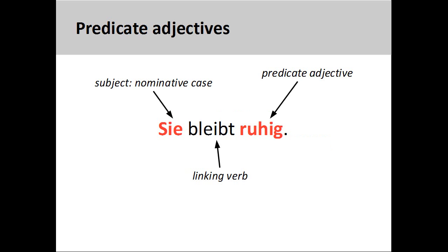In the sentence you see here, 'sie bleibt ruhig' — she remains calm — the verb 'bleibt' simply links the subject with a state of being. Since no real action is depicted, both the subject and predicate are in the nominative case.